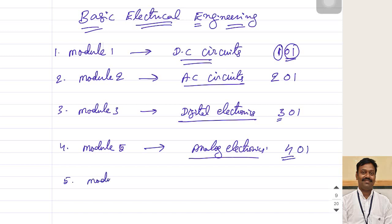And then module number six, we are going to discuss about different types of AC machines. As part of the AC machines, we are going to discuss the basics of transformers, induction machines, synchronous machines, DC machines, etc. That will be numbered as five followed by the next two digits.